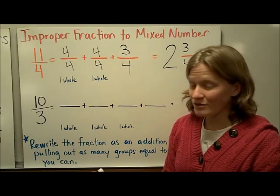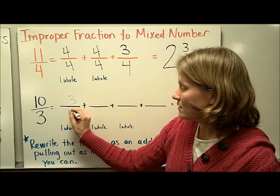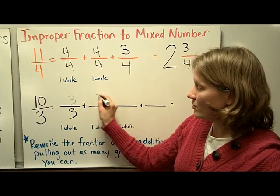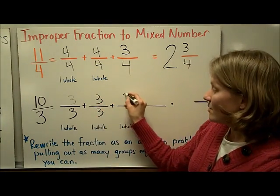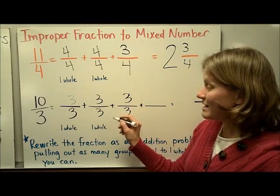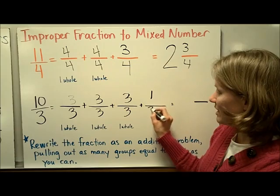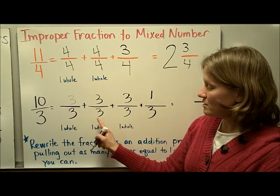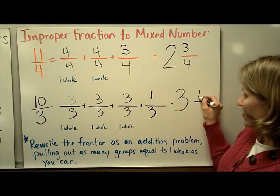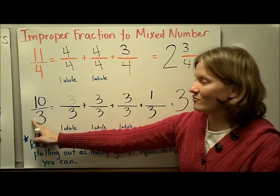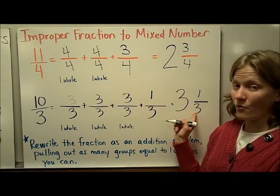I can do the same with 10 thirds. I'm going to think about 1 whole being 3 thirds and pull out 1 whole, then another 1 whole — that would be 6 thirds — then pull out another 1 whole, that would be 9 thirds. I have 10, so that would leave me 1 remaining. So this is 3 wholes and 1 third left. The improper fraction 10 thirds changed into a mixed number is 3 and 1 third.